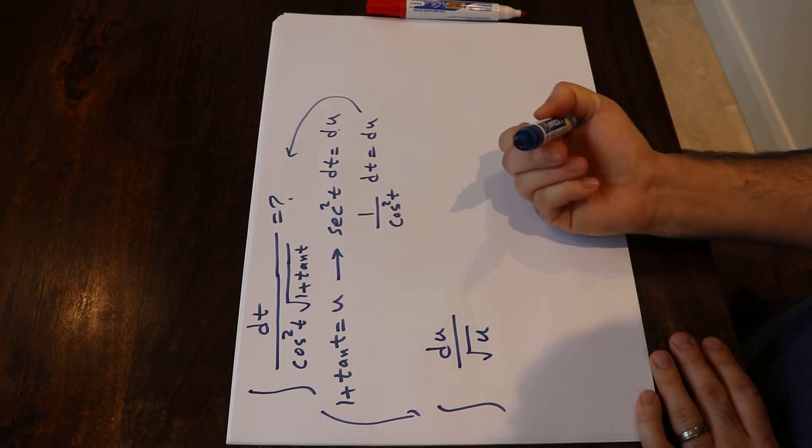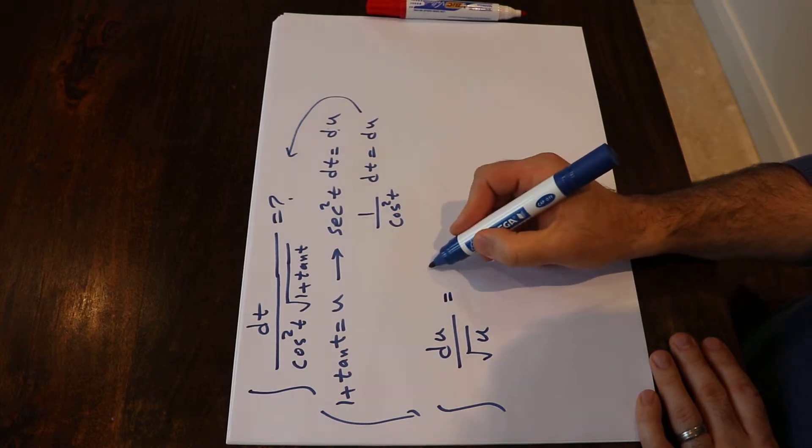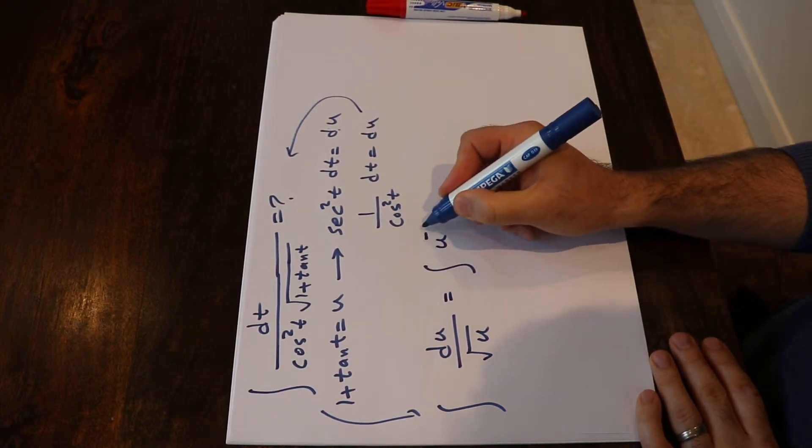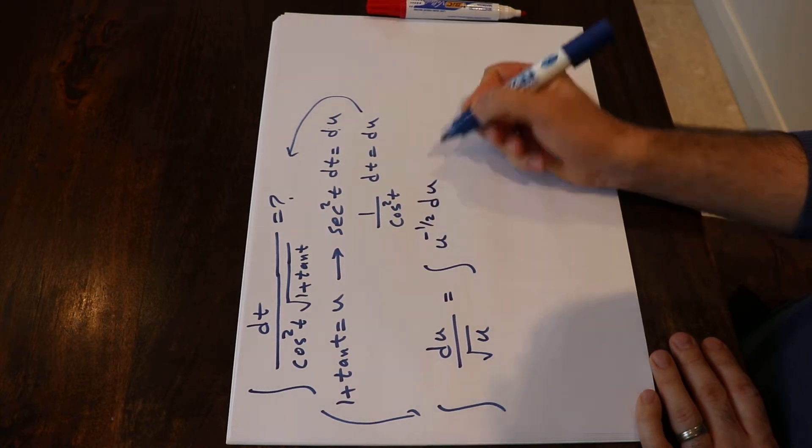Okay, so that integral will be simplified to this integral, and this integral is equal to the integral of u with the power of minus 1 divided by 2 du.